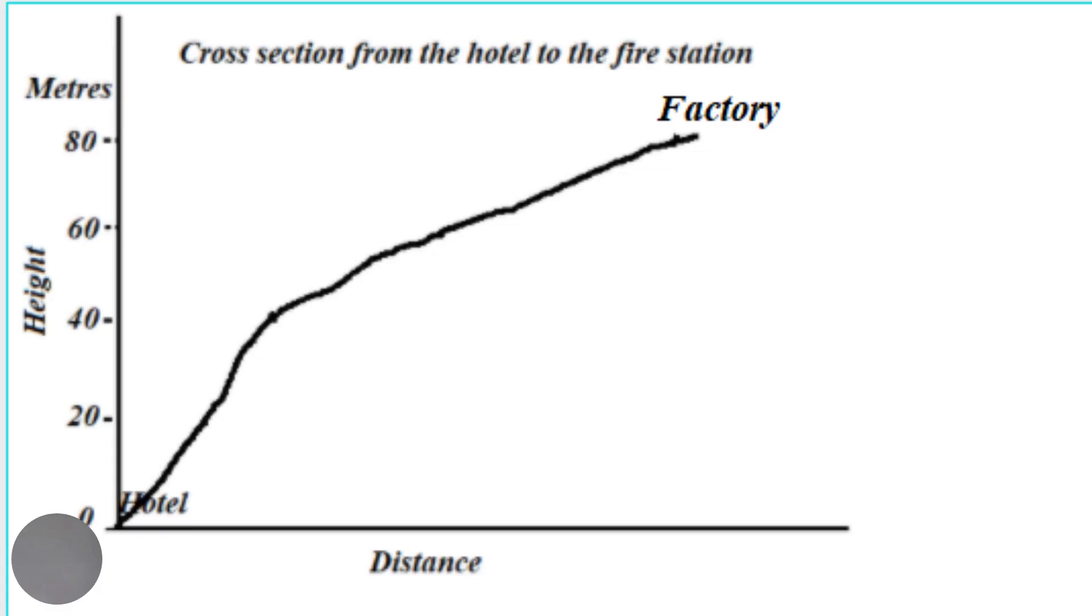Now, we will complete the cross section by labeling the axis, if we have not already done so, and putting on a suitable title.